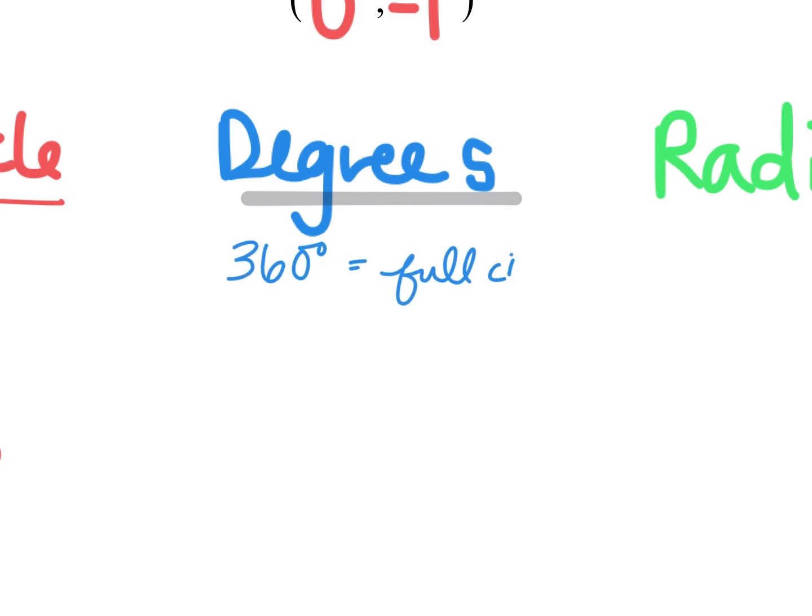And so our question is how do we find all these other different pieces? And we're gonna first count by 30s and then we're gonna go back and fill in and count by 45s.